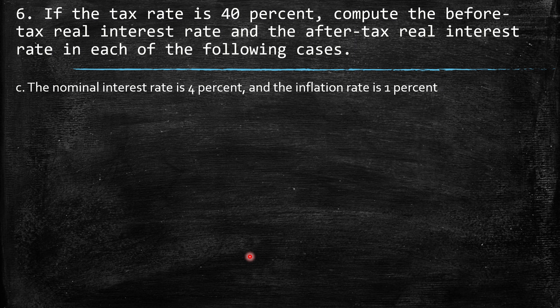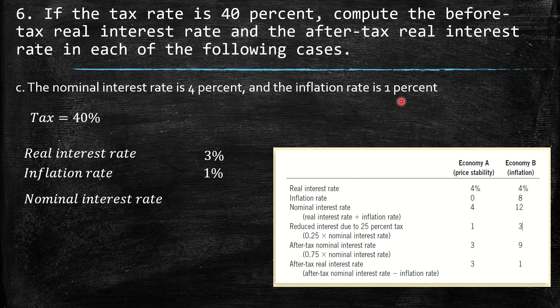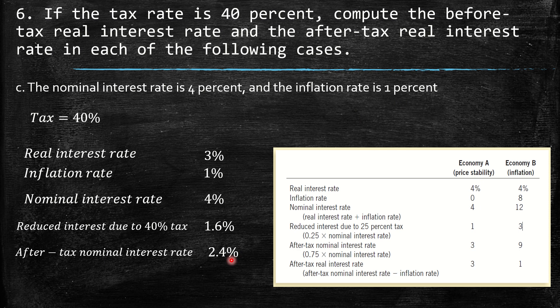Case C: This was an example from the book. The real interest rate is 3%, which is 4% minus 1%. The inflation rate is 1%, so the nominal interest rate is 3% plus 1%, which equals 4%. The reduced interest rate due to the 40% tax is 1.6%. The after-tax nominal interest rate is 4% minus 1.6%, giving us 2.4%. The after-tax real interest rate is 2.4% minus the inflation rate of 1%, which equals 1.4%.